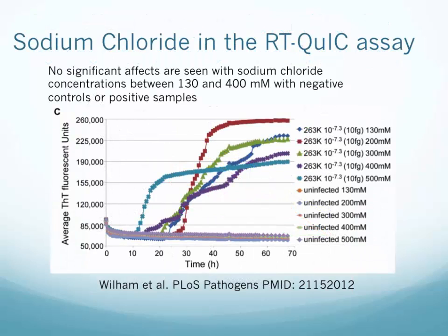Now let's take a little look at what salt concentration does in the RT-QUIC assay. This is a graph from Jason Wilhelm's paper published in PLOS Pathogens by the Coe Lab at Rocky Mountain Labs. Between about 130 millimolar to 400 millimolar salt, there's no real difference in reaction rate. But at 500 millimolar salt, there may be a slight increase in reaction rate, and there appeared to be no effect on the negative controls. We don't typically optimize salt concentration — we have a standard concentration of 300 millimolar salt, and when we've tried to optimize it, we haven't seen a drastic effect.